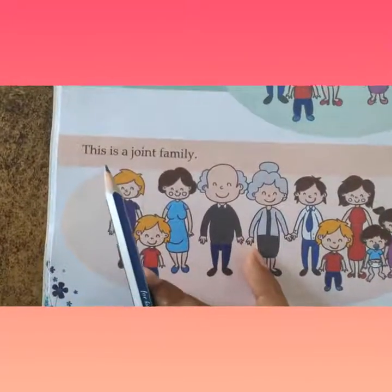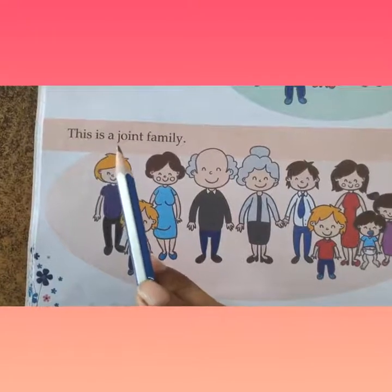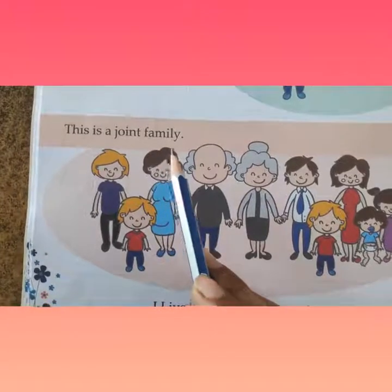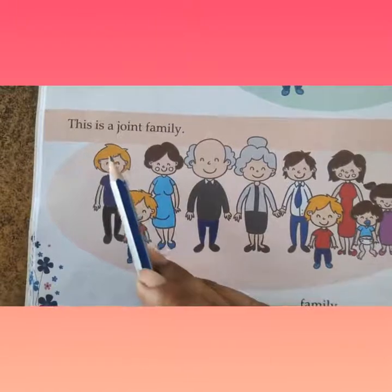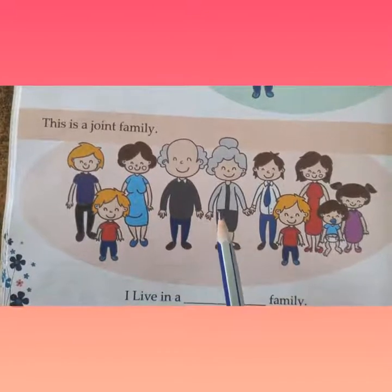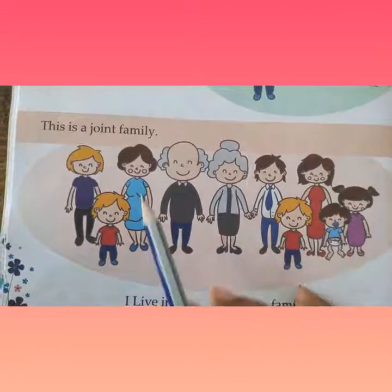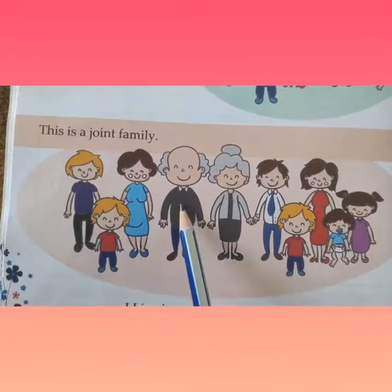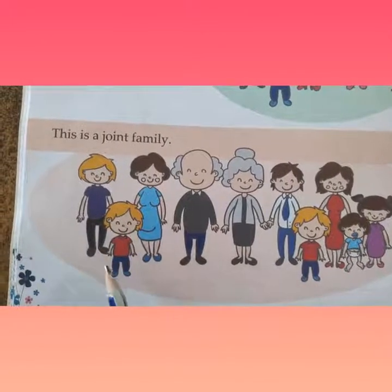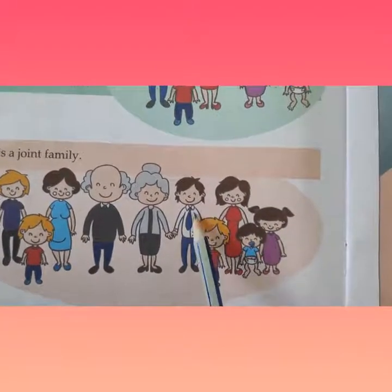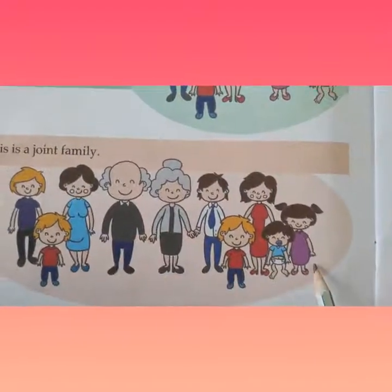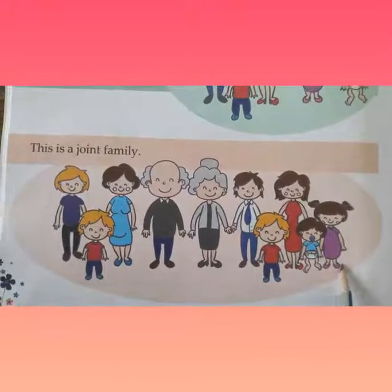T-H-I-S is a J-O-I-N-T F-A-M-I-L-Y — this is a joint family. In this picture you can see grandfather and grandmother — they are grandparents. Grandparents, father, mother and their children, and uncle, aunt and their children — they all live together. That is called a joint family.